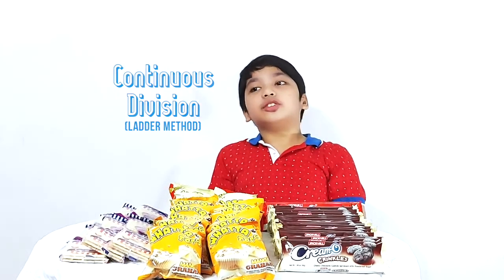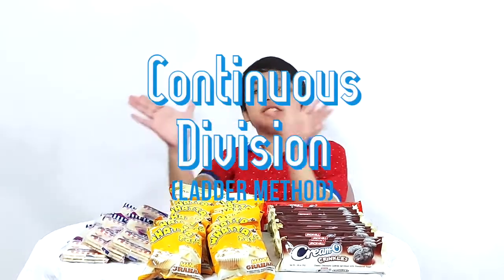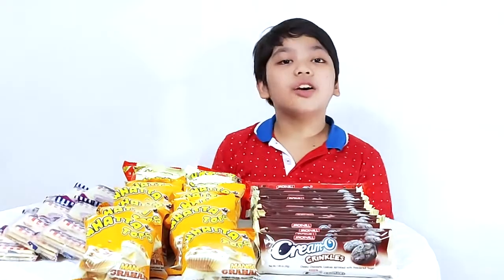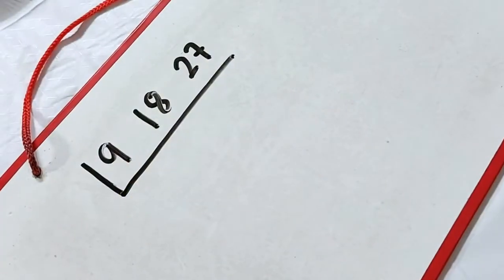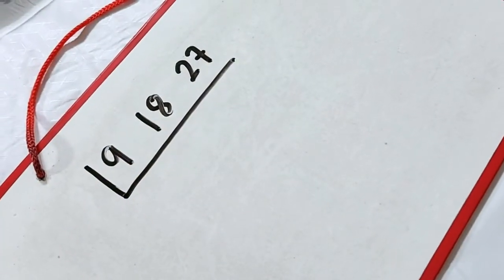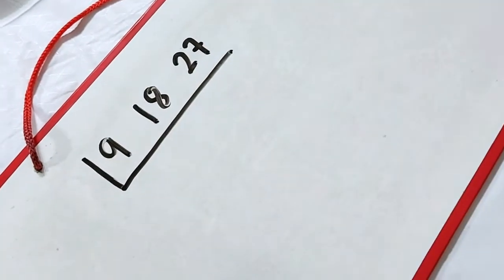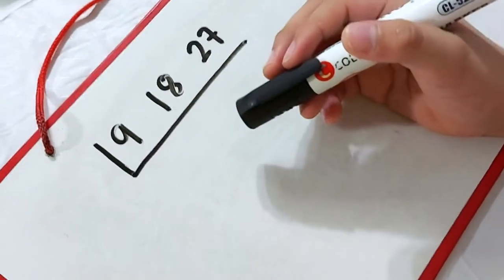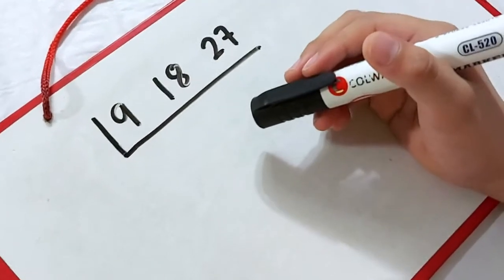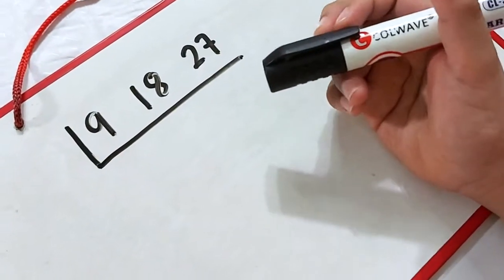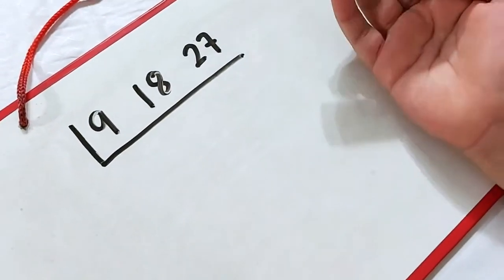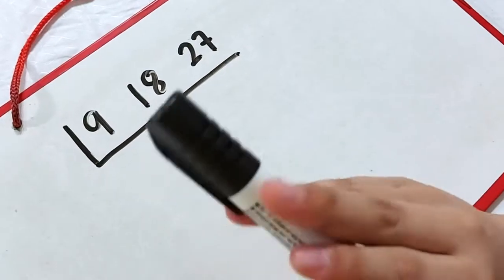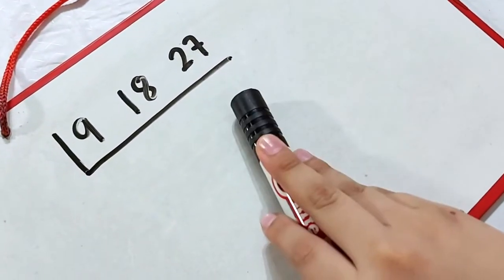I'm going to teach you how to do Continuous Division. So, I have the board right here. As you can see, I have written the numbers in ascending order. The first step we need to do is to think of a prime number that can be used to divide 9, 18, and 27.